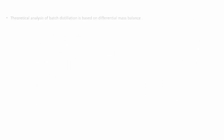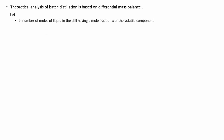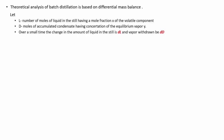The theoretical analysis of batch distillation is based on a differential mass balance, since the composition is changing with time. Let L be the number of moles of liquid in the still with mole fraction x of the more volatile component, and D the moles of accumulated condensate having an equilibrium vapor concentration y. So x is the mole fraction in the liquid and y is the equilibrium vapor concentration in the distillate.